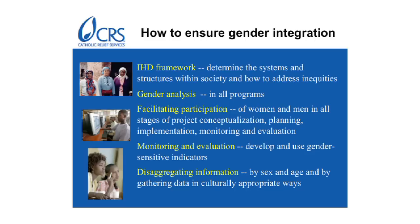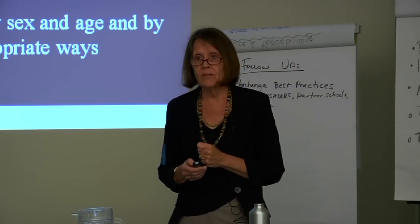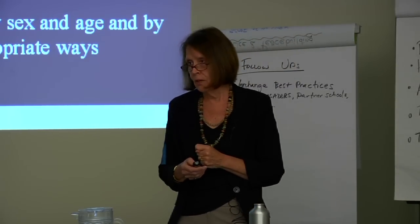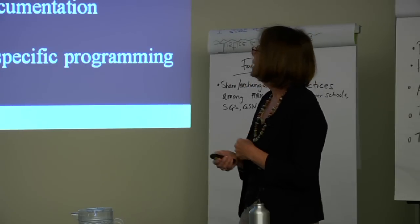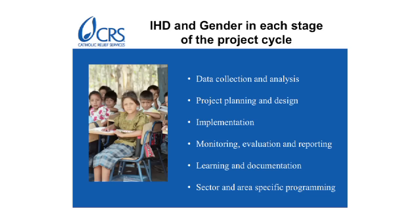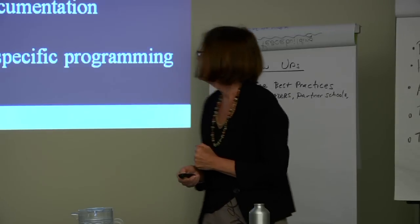We need to look at monitoring and evaluation. Obviously, the donors are demanding excellence — they're demanding evidence of an impact that we know we need to be able to show. So those things are all very important. We use IHD and gender in the various aspects of the program cycle from the beginning to the end. In particular, we've been using it very systematically — much more so now — in some of the sectoral work, principally agriculture and health. That's where we've found most of it.